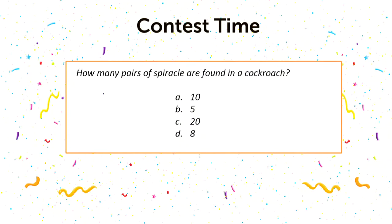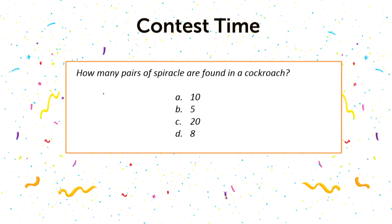Today's contest question: how many pairs of spiracles are found in cockroach? Options are A: 10, B: 5, C: 20, D: 8. The question is now off screen — and there are many correct answers visible in the comments.